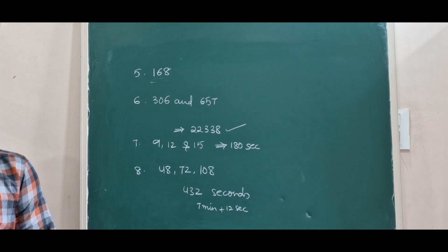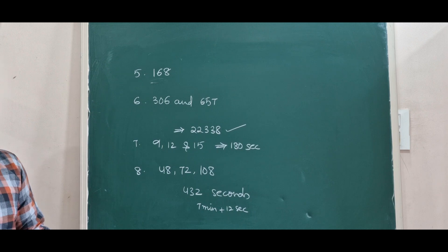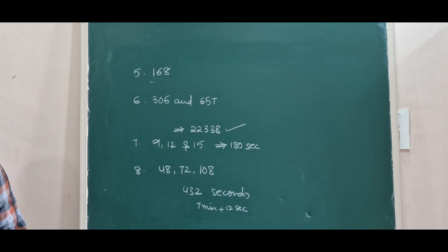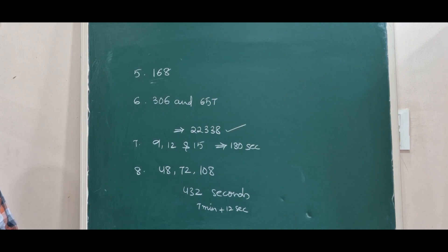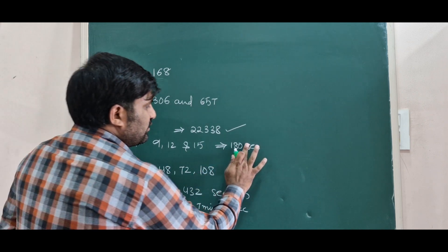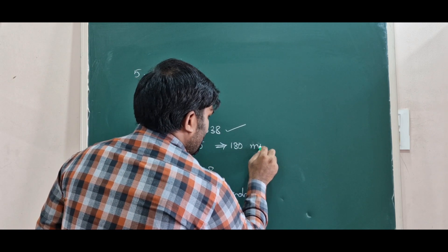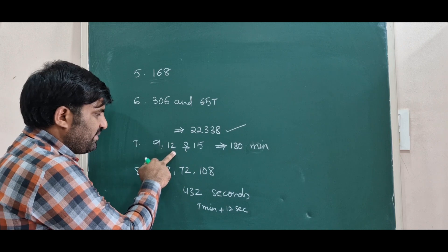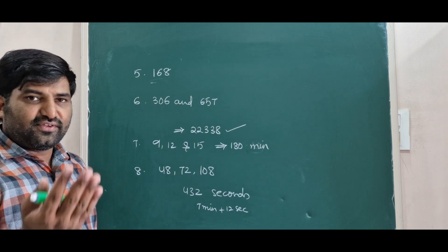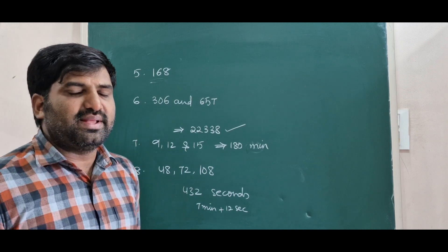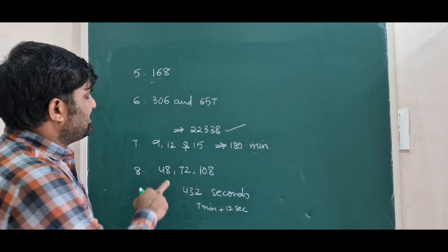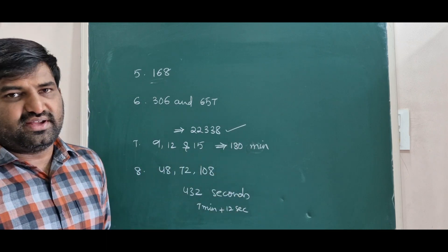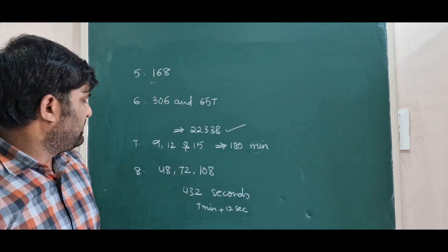Question 7 is a word problem: three bells toll at intervals of 9, 12, and 15 minutes respectively. If they start tolling together, after how long will they toll together again? Since we need to find when all three bells toll simultaneously, we find the LCM of 9, 12, and 15 minutes. The LCM is 180 minutes, which is 3 hours. So after 3 hours all three bells will toll together again.